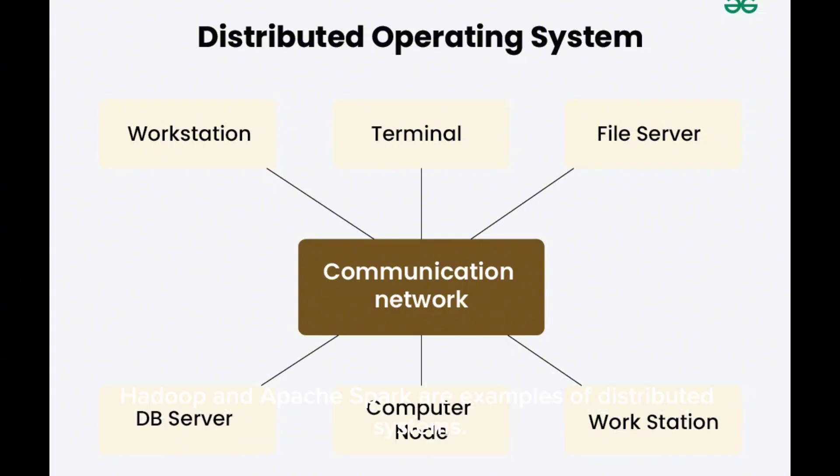Examples: Hadoop and Apache Spark are examples of distributed systems. They help manage and process enormous data sets across multiple machines. Distributed systems are powerful and scalable, but can be complex to manage.